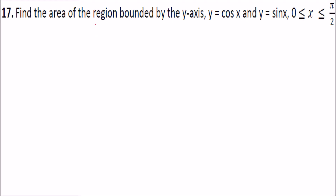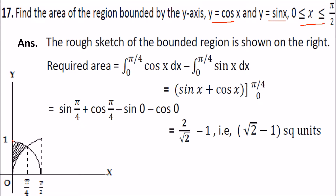Find the area of the region bounded by the y-axis, y equals cos x and y equals sin x for x in [0, π/2]. You must know the curves of cos x and sin x in this range. Sin(π/4) and cos(π/4) both equal 1/√2, so they intersect at x equals π/4.